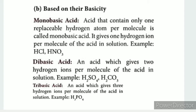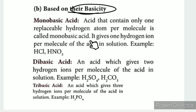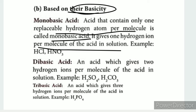The second classification is based on basicity. Basicity refers to the number of replaceable hydrogen atoms per molecule of an acid. An acid that contains only one replaceable hydrogen atom per molecule is called a monobasic acid — it gives one hydrogen ion per molecule in solution. Examples of monobasic acids are HCl and HNO3.